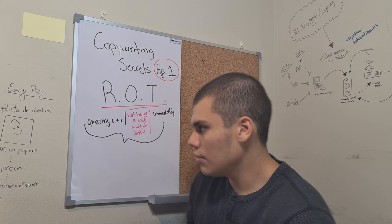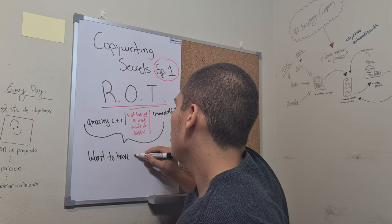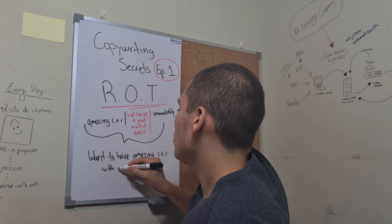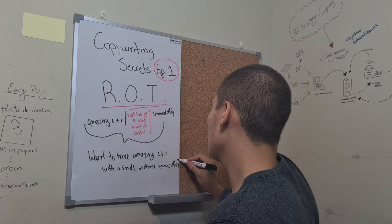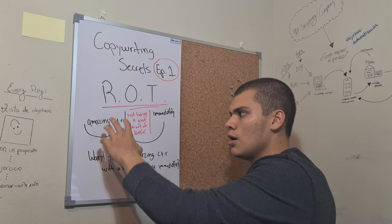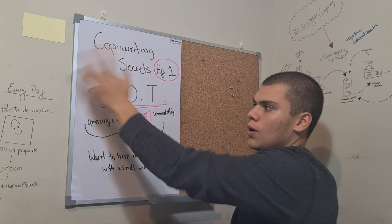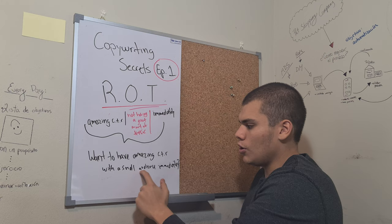Want to have amazing click-through rates? This is my first draft. Of course guys, you have to take your time. You have to play with the words. You can try OTR, or maybe for copywriting secrets, ORT is gonna be the best formula. ORT, TOR, it depends on what you're looking for and the visuals and the content of the video. So I came up with this one: Want to have amazing click-through rates with a small audience immediately? That's gonna be the title of my video.